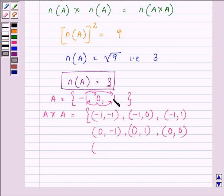Similarly, 1 will be paired with -1, then 1 with 0, and 1 with 1 itself. So these are the 9 elements present in A×A.